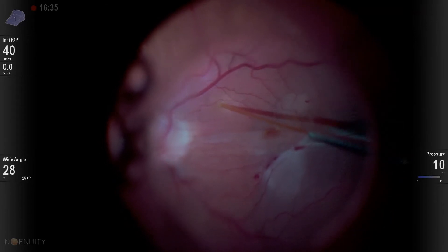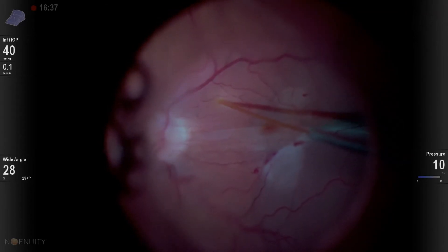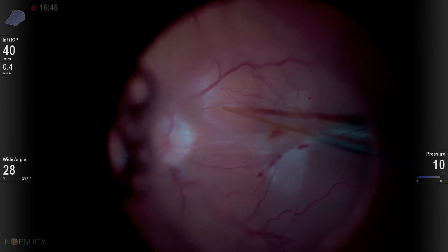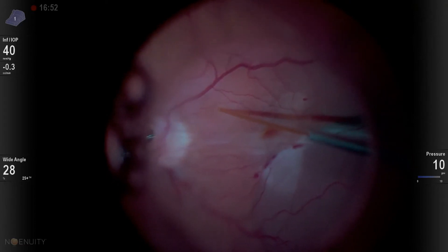I decide let's go nasal. So I go infernasal here, and I get a bubble, and once again it does not dissect into the macula. Instead, it starts to head out into the periphery.